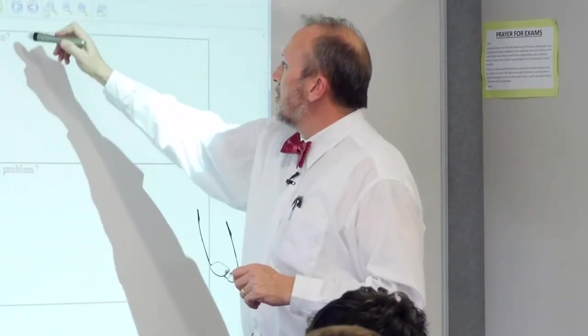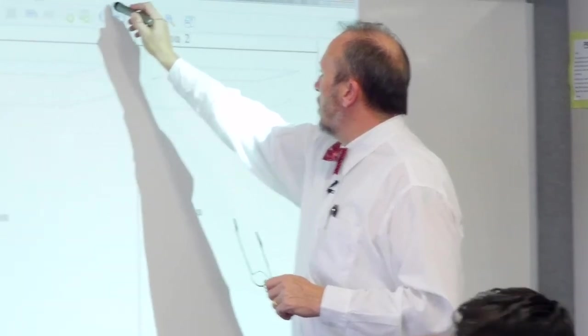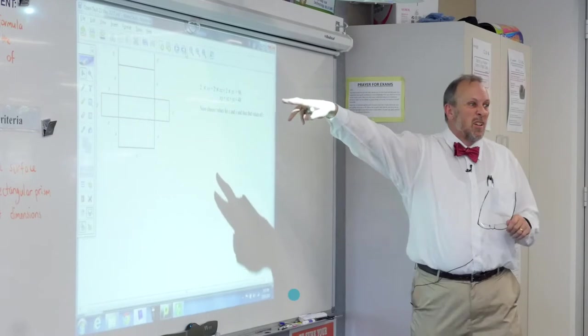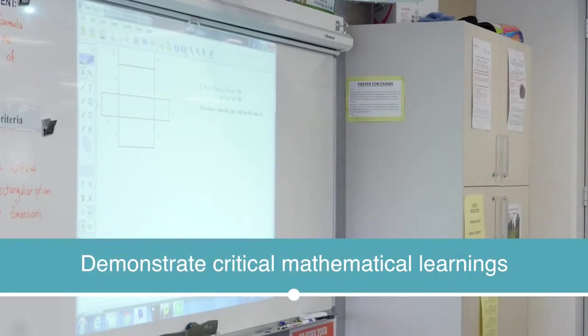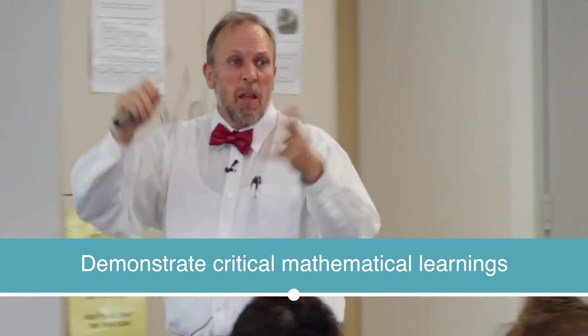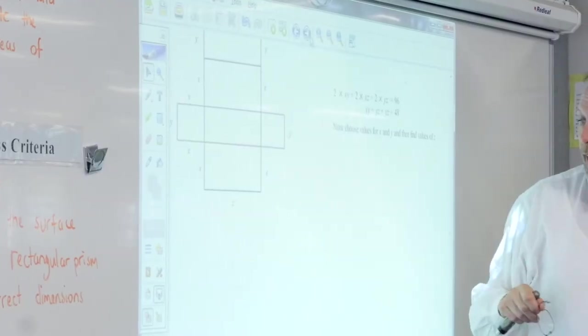So couple of different ways people went around doing that. Can I just show you how I looked at this one? When I did this one, I did the way Jayden did. I went through and had a look at getting the net of it. It's not a bad way to do it. But if you just listed all the different shapes, that's fine.